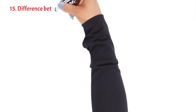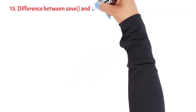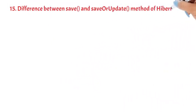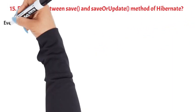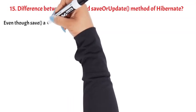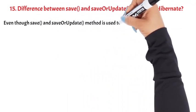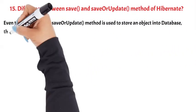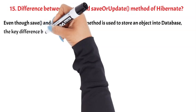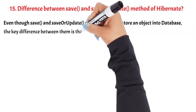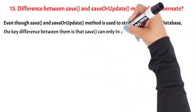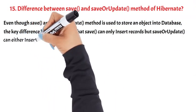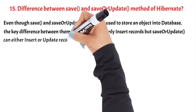Question 15: Difference between save and saveOrUpdate method of Hibernate. Even though save and saveOrUpdate methods are used to store an object into the database, the key difference is that save can only insert records, but saveOrUpdate can either insert or update records.